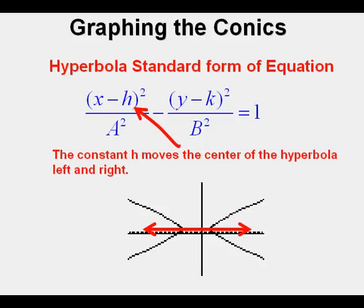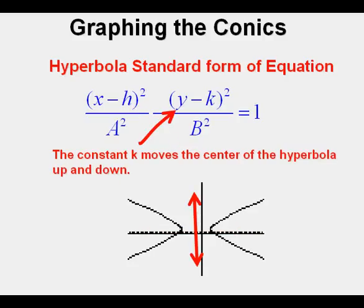As in the other conic sections, the h value moves the center of the hyperbolic curves left and right. X minus a positive h will move the hyperbola to the right, and x minus a negative h will move the hyperbola to the left, whereas the k value moves the center of the hyperbolic curves up and down. If it's y minus a positive number, it will move up.